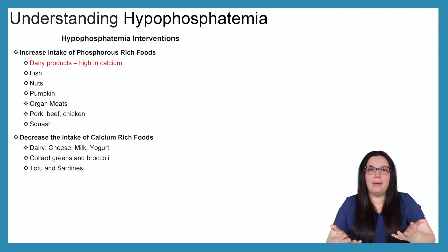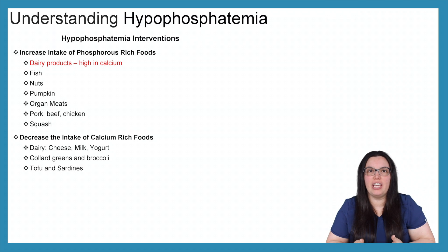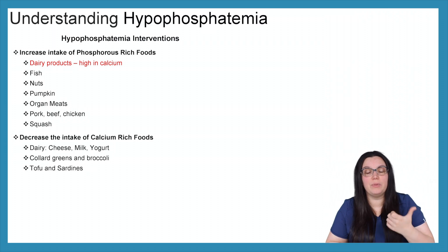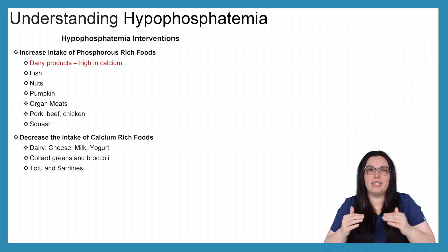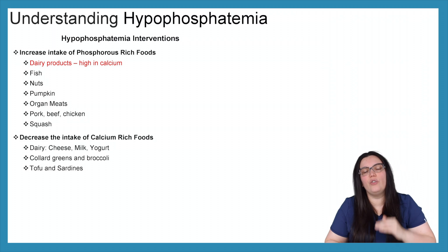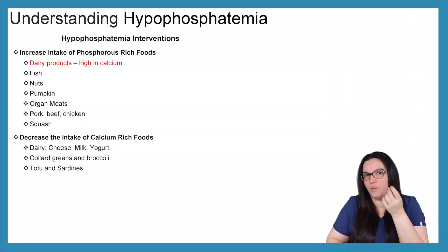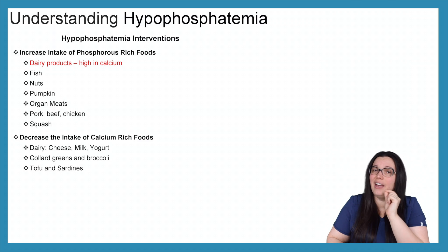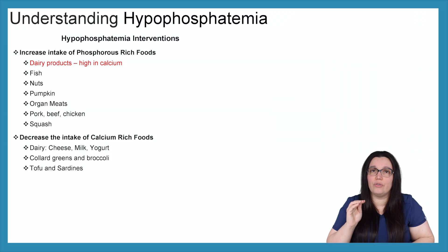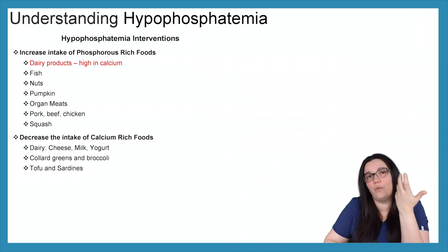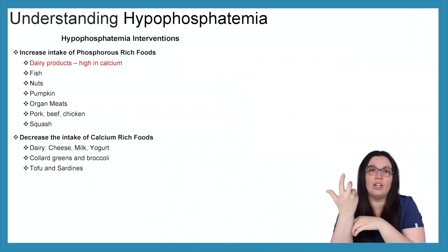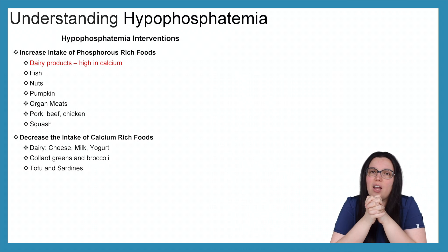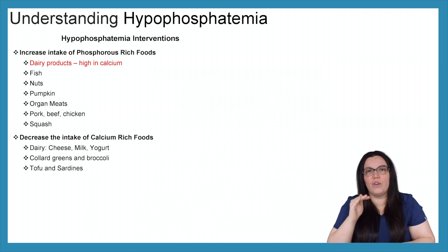As with all electrolyte patients, we really want to provide education, particularly talking about their diet. When it comes to hypophosphatemia, we really want to increase intake of phosphorus-rich foods. But in the same coin, we also need to decrease their intake of calcium-rich foods, because they have a very inverse relationship. If you're increasing phosphorus-rich foods but still eating a lot of calcium-rich foods, it's really not going to make a difference. You have to find that balance.